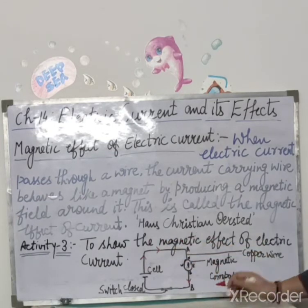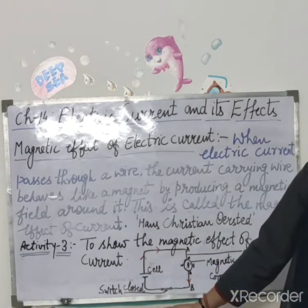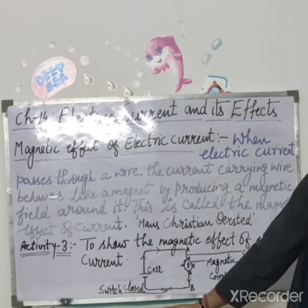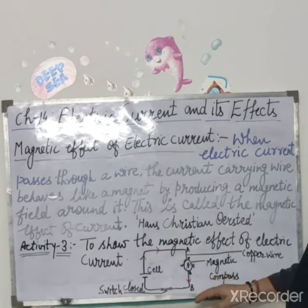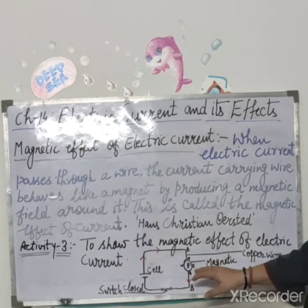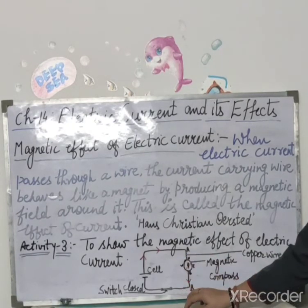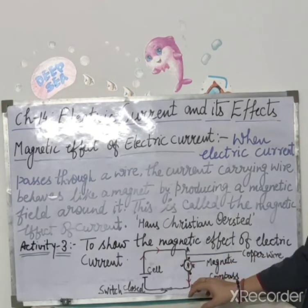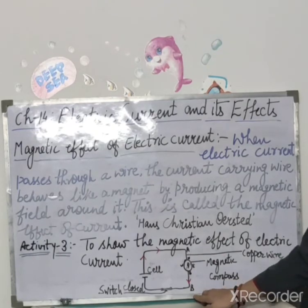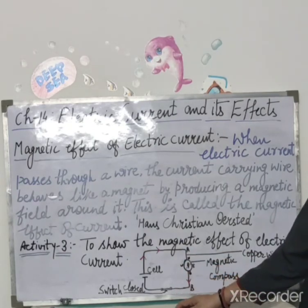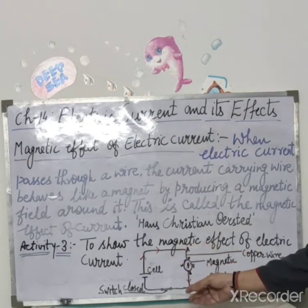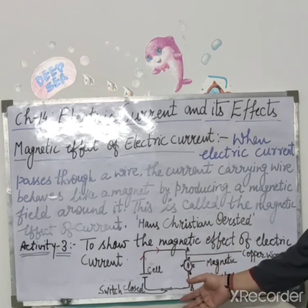To isse hum log ne kya conclusion nikala? The conclusion of this activity is: the deflection of compass needle shows that the current carrying wire behaves like a magnet and produces a magnetic field around it. The current carrying wire attracts or repels other magnets such as the compass needle. Yani jab current carrying wire hota hai, woh magnet ki tarike se behave karne lagta hai, apne charo taraf magnetic field produce karta hai, aur compass ki needle ko attract ya repel karne lagta hai.